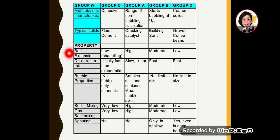Each of these groups gives different characteristics or reactions in terms of bed expansion, bubbling properties, mixing, as well as spouting. The bed expansion is highest in group A. Group B gives moderate bed expansion, while group D and C have low bed expansion due to the characteristics of the particles. For bubble properties, the cohesive does not give you bubbling.